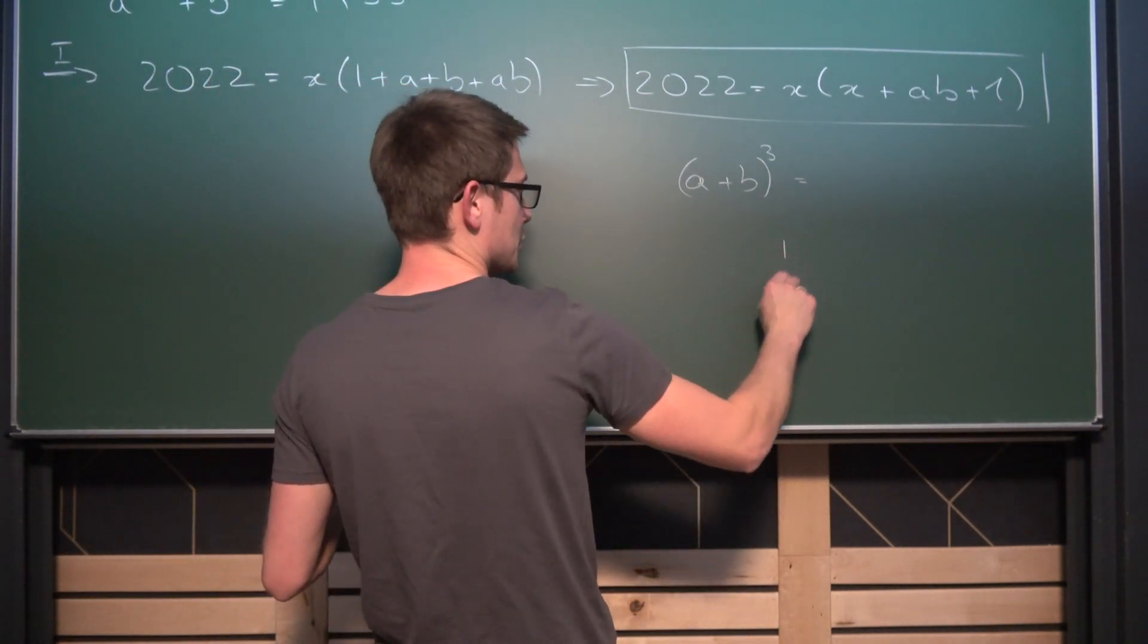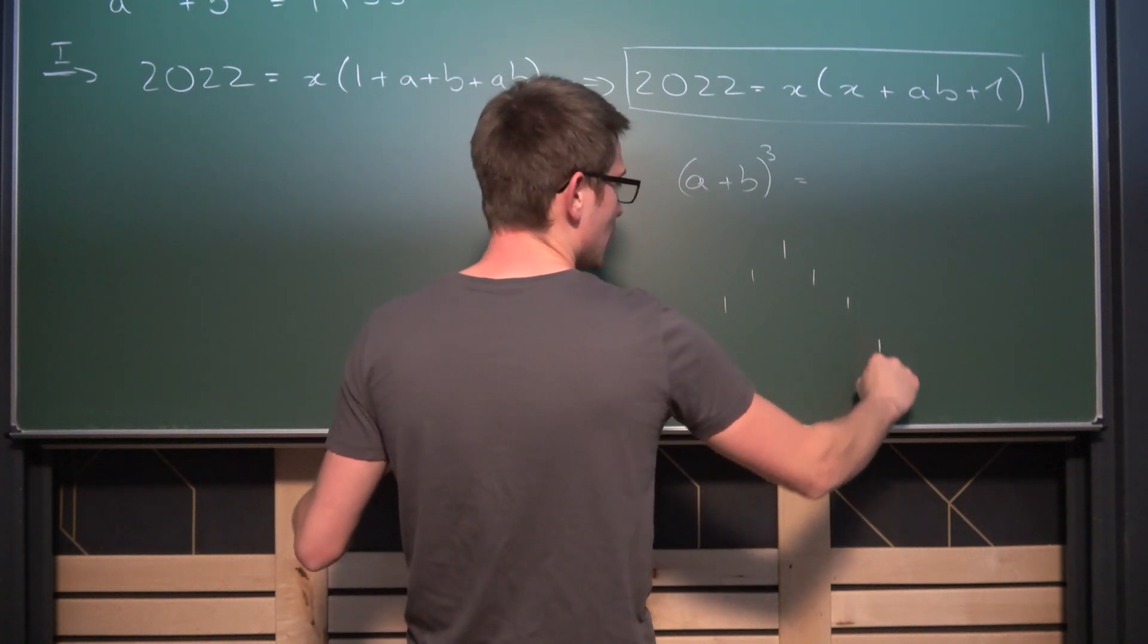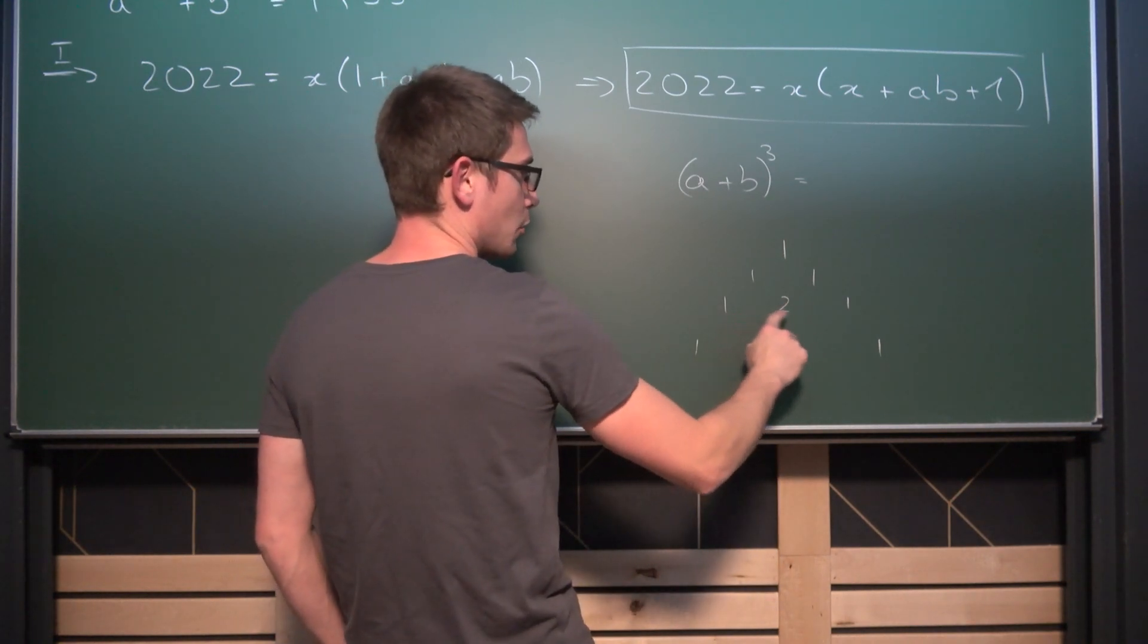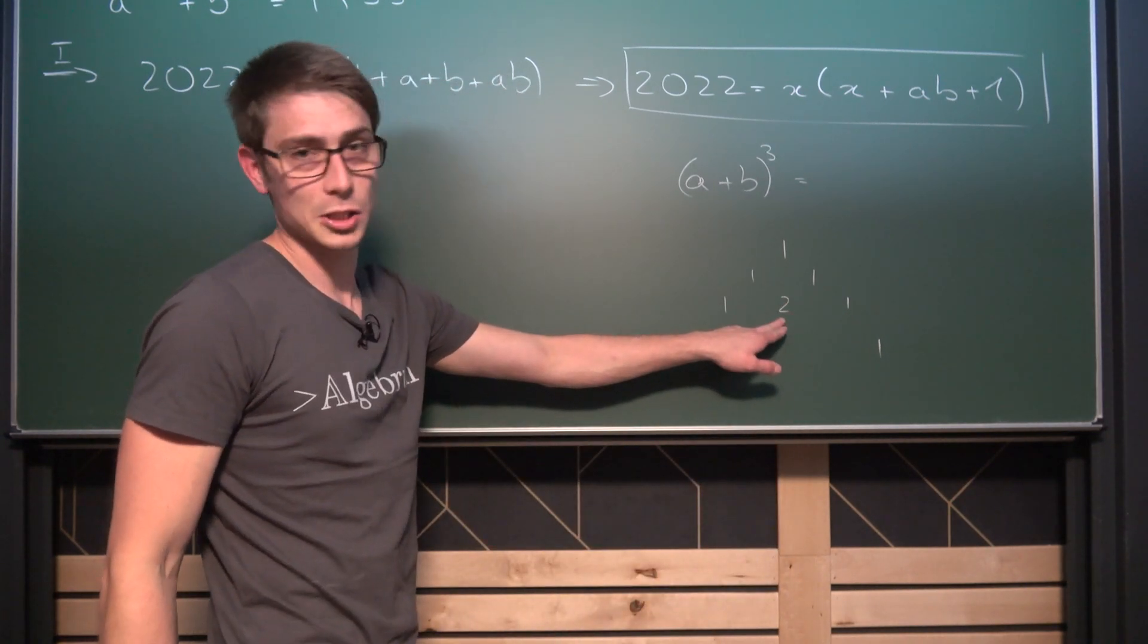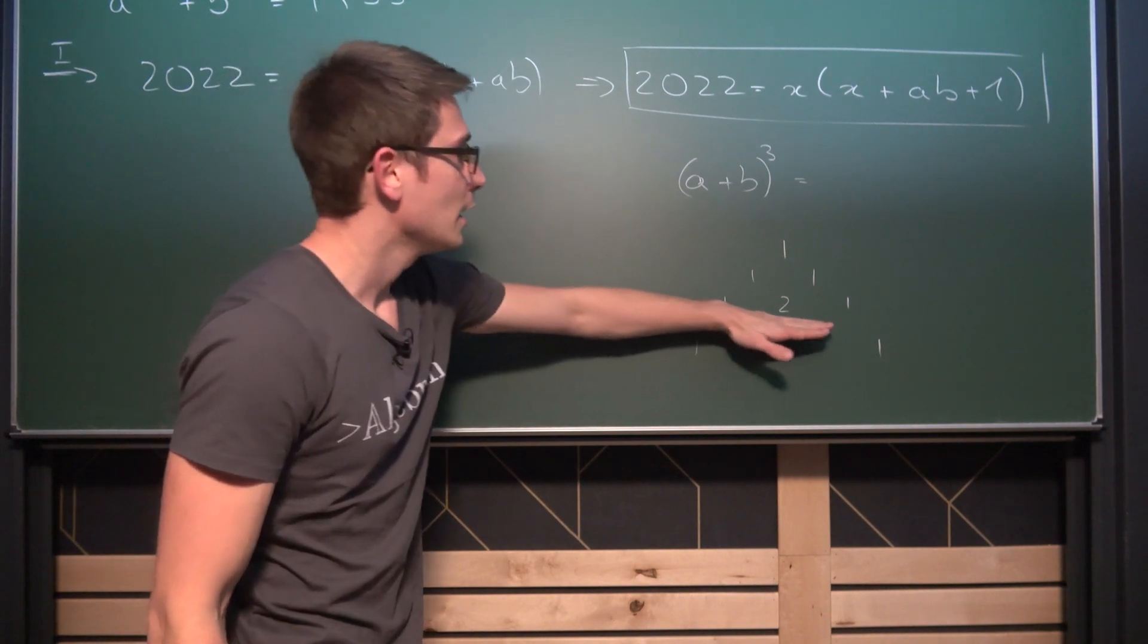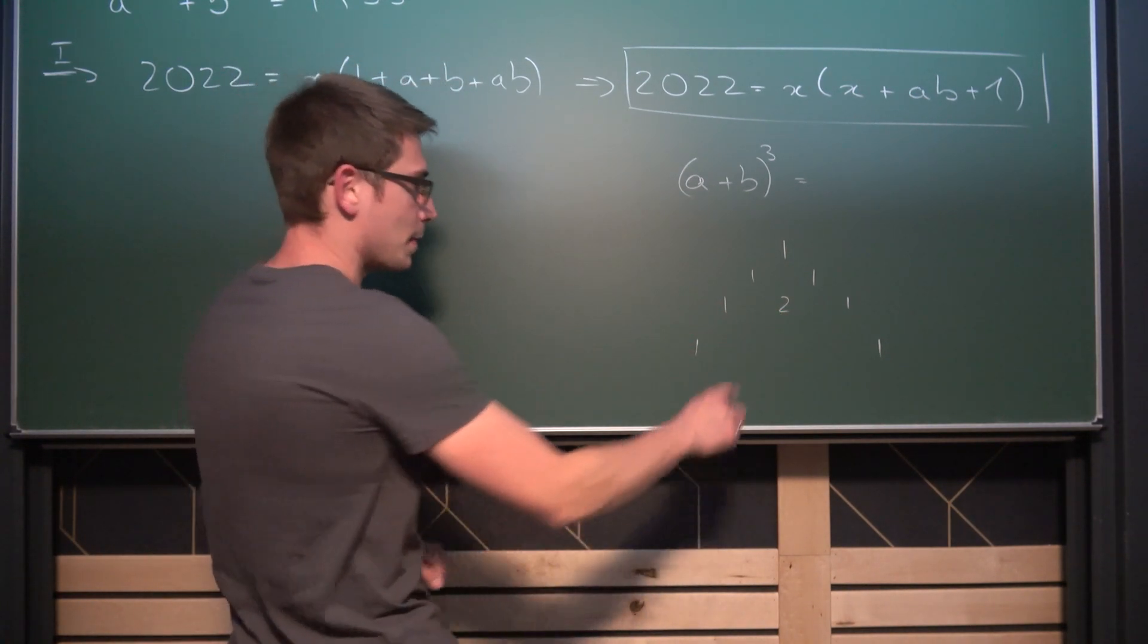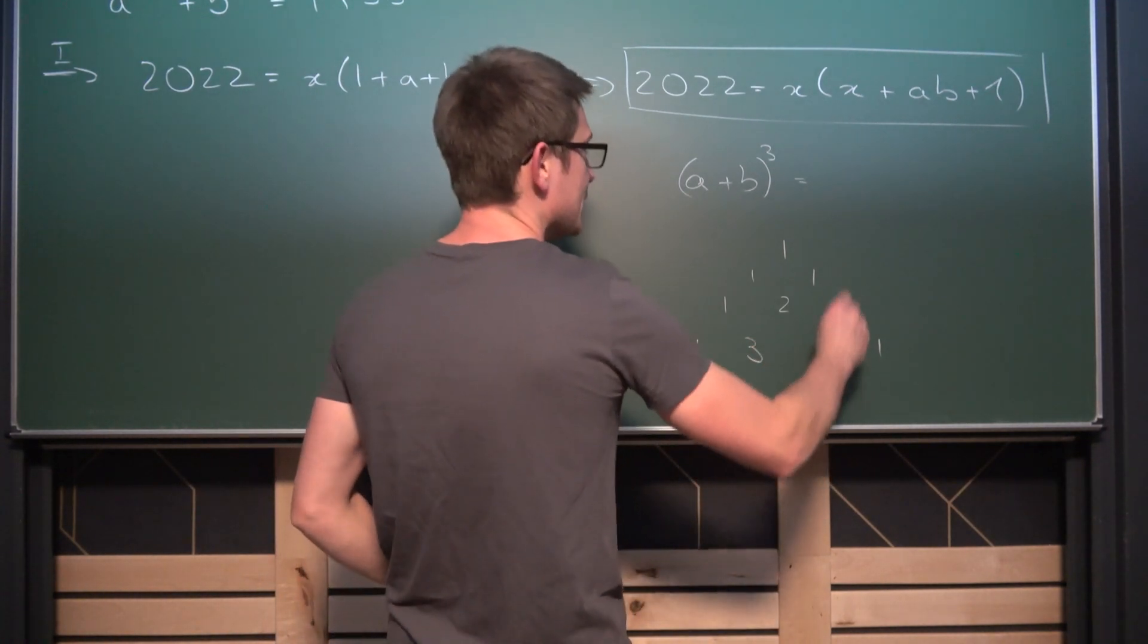So Pascal's triangle is 1 and then 1 1 and 1 1 and so on all the ones on the outside. 1 plus 1 is 2. This right here are the coefficients and also kind of the exponents for our regular binomial formula of the second degree. But if you expand it a little bit more you get 3s here.